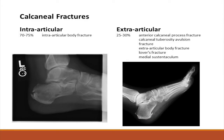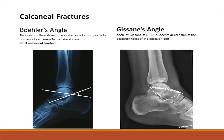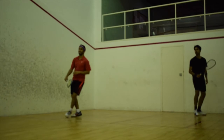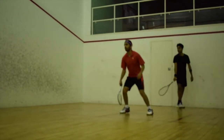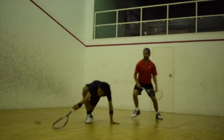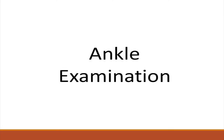Calcaneal fractures are classified based on involvement of the subtalar joint. Intraarticular fractures are more common and involve the posterior talar articular facet of the calcaneus. Two radiological angles are used to identify calcaneal fractures: when Böhler's angle is less than 20 degrees and when the angle of Gissane is greater than 130 degrees. Forced inversion and eversion causing ankle fractures are common in sports like squash. A good prognosis relies on early identification and treatment, which requires a sound approach to the examination of a suspected ankle fracture.